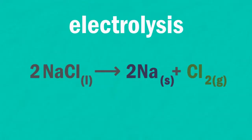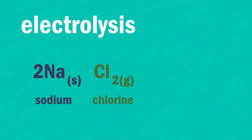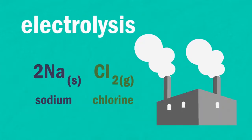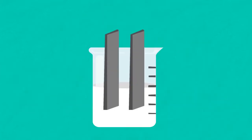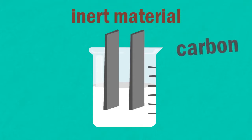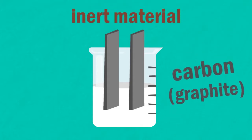Overall, the electrolysis has split the molten sodium chloride into its elements, sodium and chlorine. And this is how sodium and chlorine are produced industrially. The electrodes themselves are usually made from an inert material such as carbon or graphite. This is to ensure that the electrodes aren't involved with the reaction.